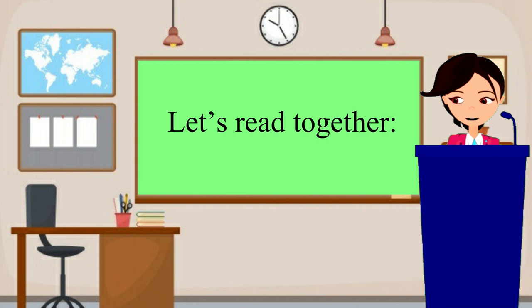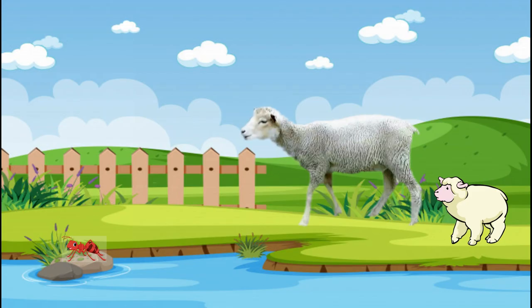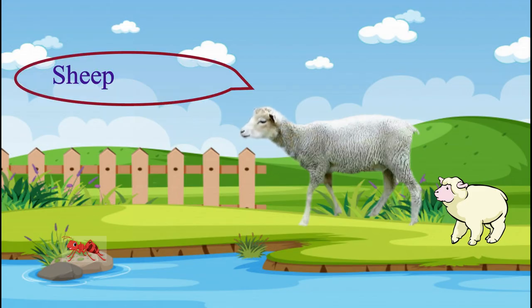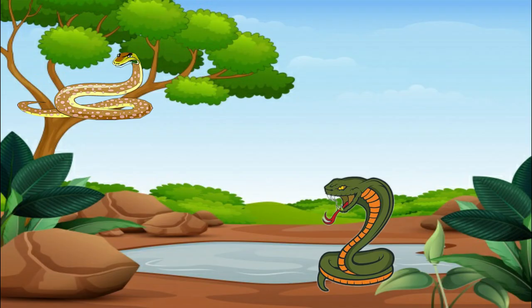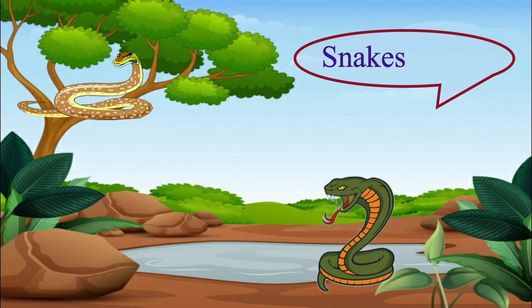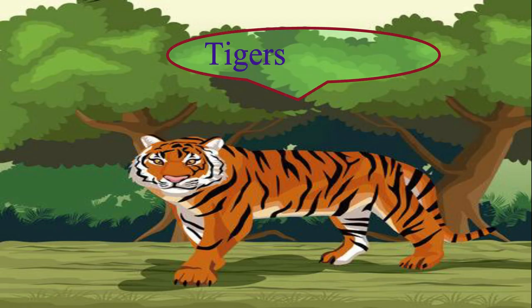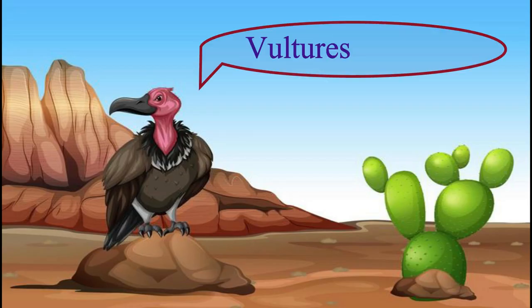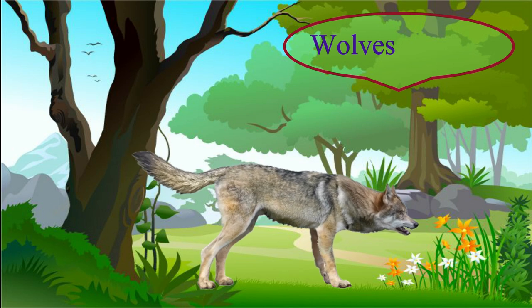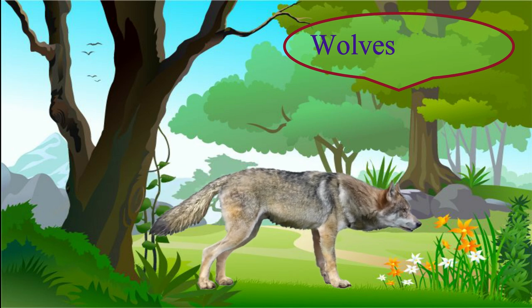Now let us read together the sounds the following animals make: sheep — bleat; snakes — hiss; squirrels — squeak; tigers — growl; vultures — scream; wolves — howl.